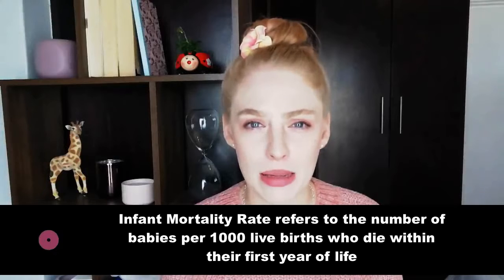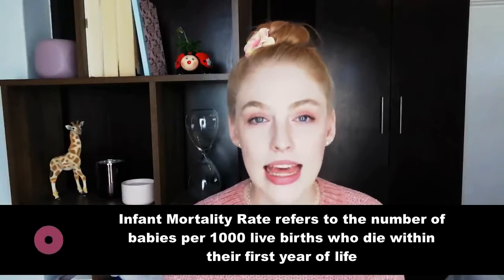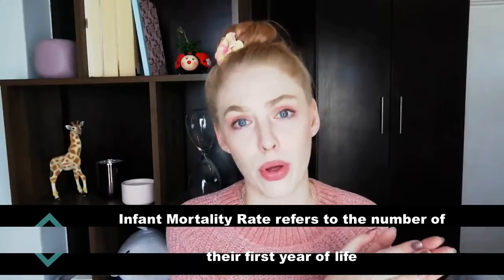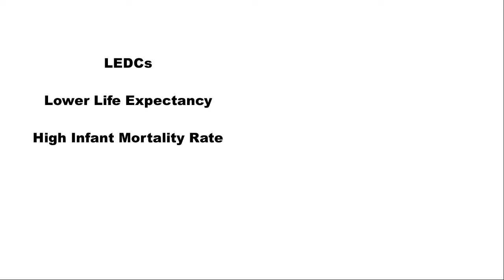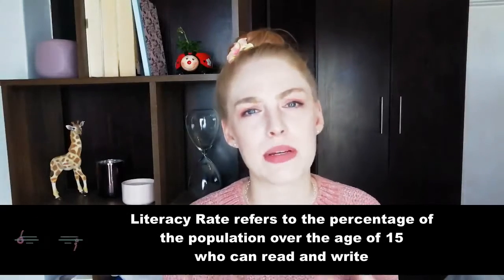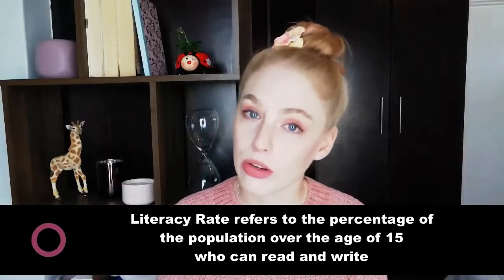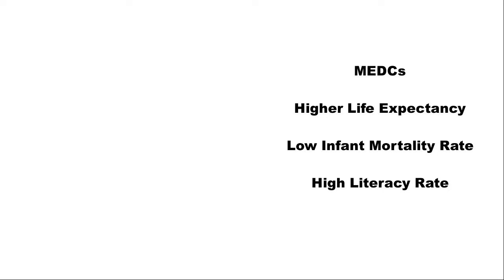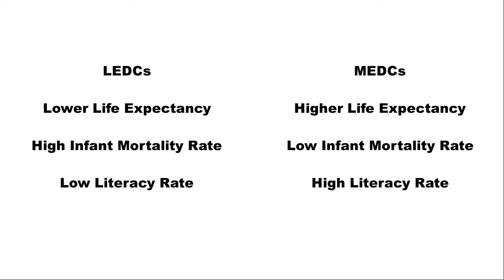Infant mortality refers to the number of babies per 1,000 live births that die within their first year of life or at birth. Again, this is often linked to healthcare facilities — places with a high infant mortality rate, meaning that more babies die, generally have poorer healthcare facilities. The third social indicator of development is literacy rate. Education is a very good indicator in terms of seeing how developed a country is. Literacy rate refers to the percentage of the population who are over the age of 15 who can read and write. MEDCs generally have a higher literacy rate, whereas LEDCs generally have a lower literacy rate.